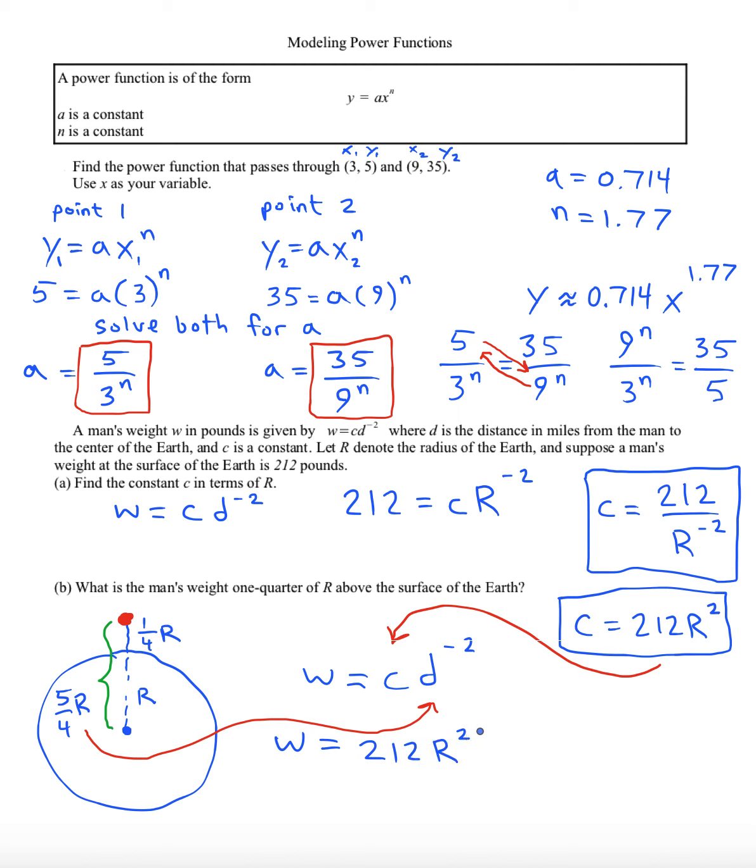We'll get 212 r squared for c, then for d we'll get 5/4 r, raise that to a negative 2 power. Now we can apply our rules of exponents, send that negative 2 to everybody, even the denominator. So we'll get 212 r squared times 5 to the negative 2 over 4 to the negative 2 times r to the negative 2.